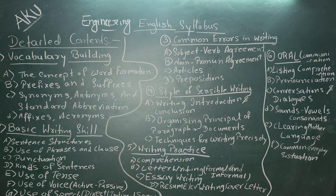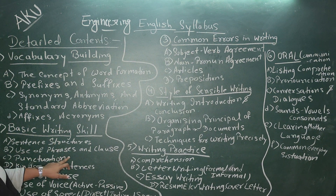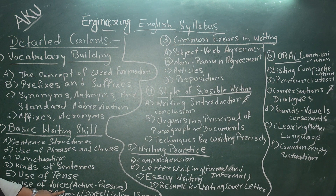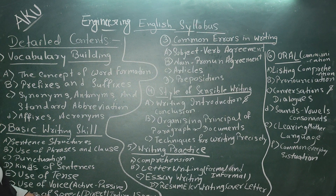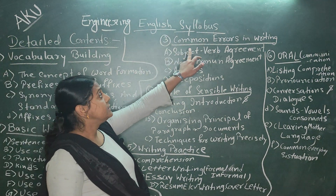Second is basic writing skill. In basic writing skill, we are going to focus on sentence structure, use of phrases and clauses, pronunciation, kinds of sentences, use of tense, use of voice — active and passive — use of speech — direct and indirect speech — and modal verbs.